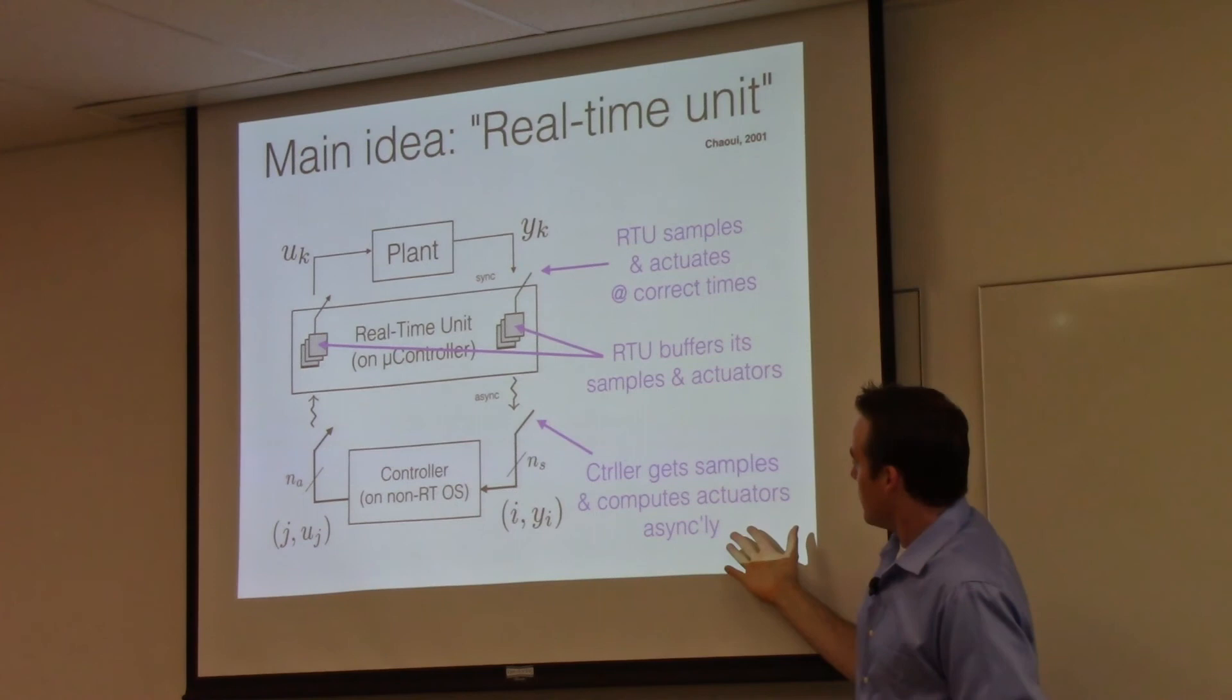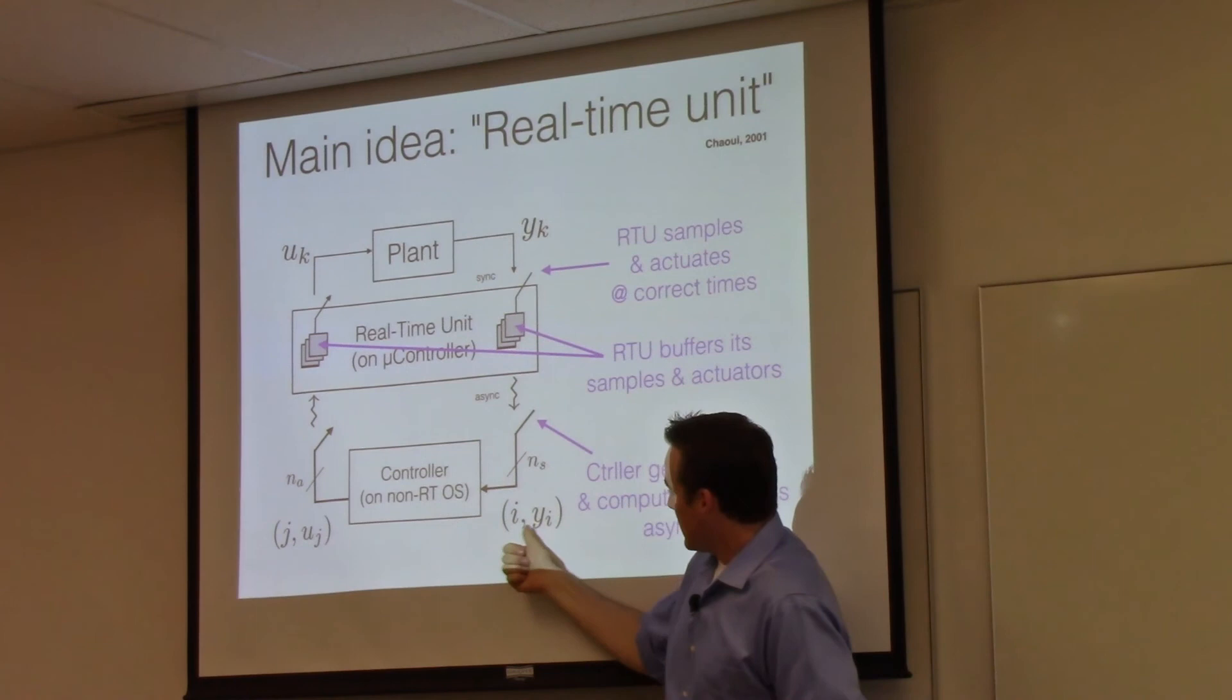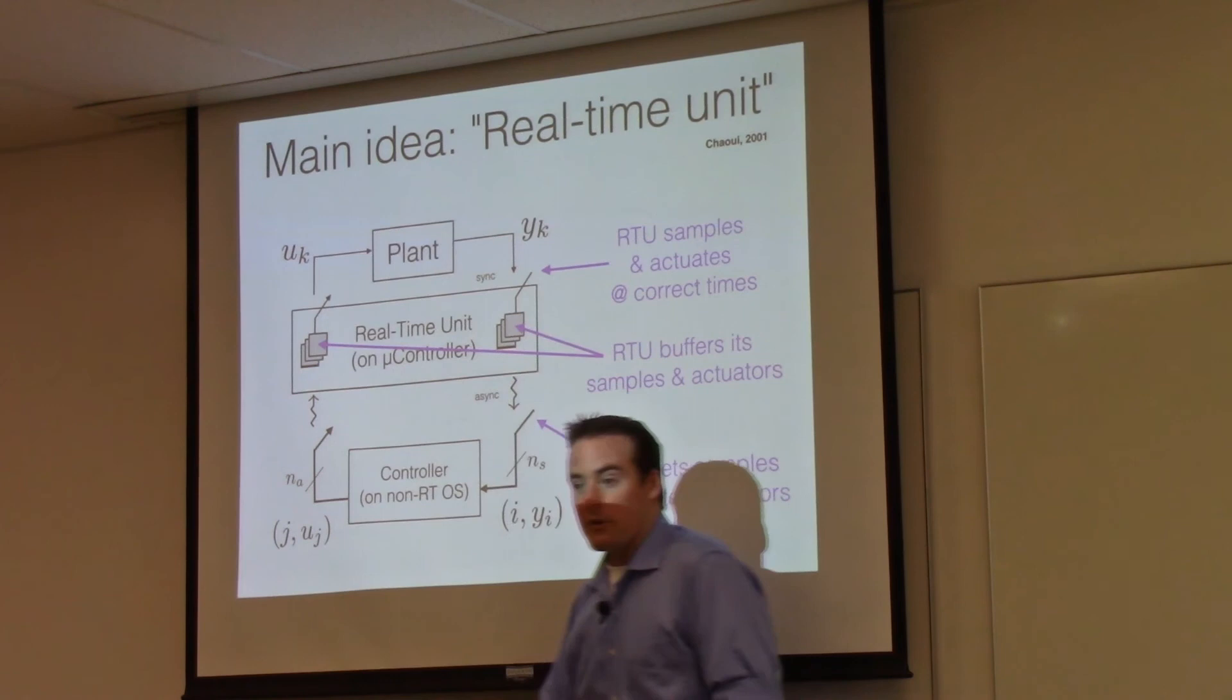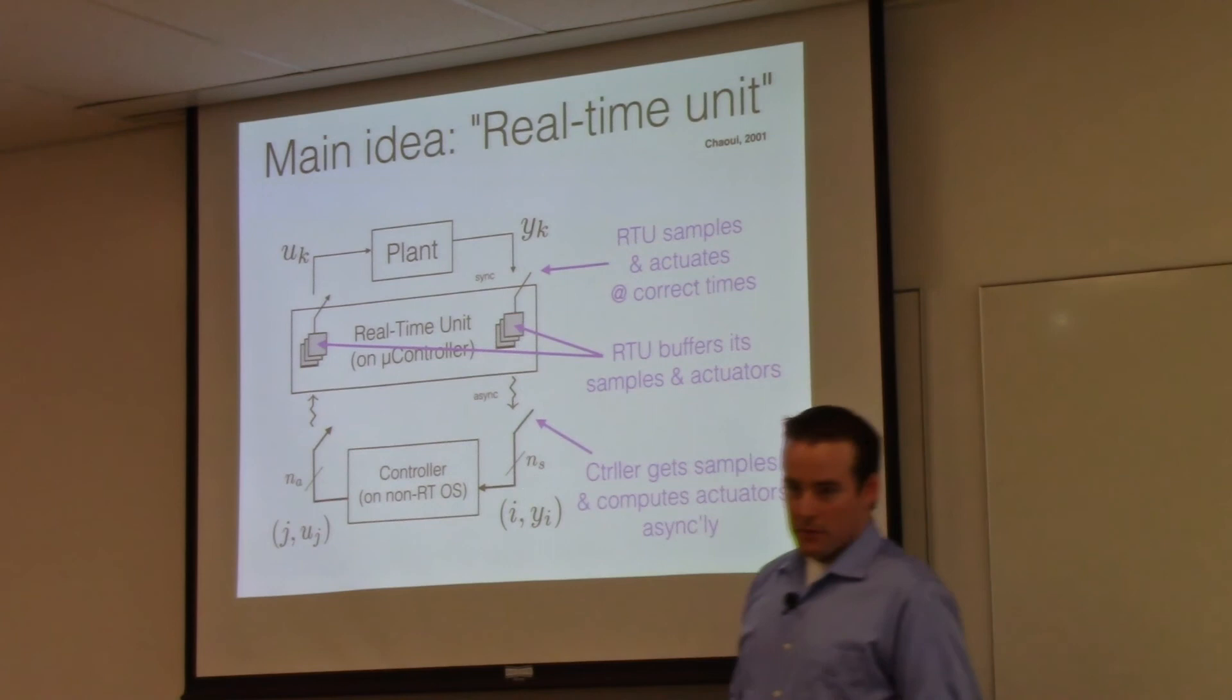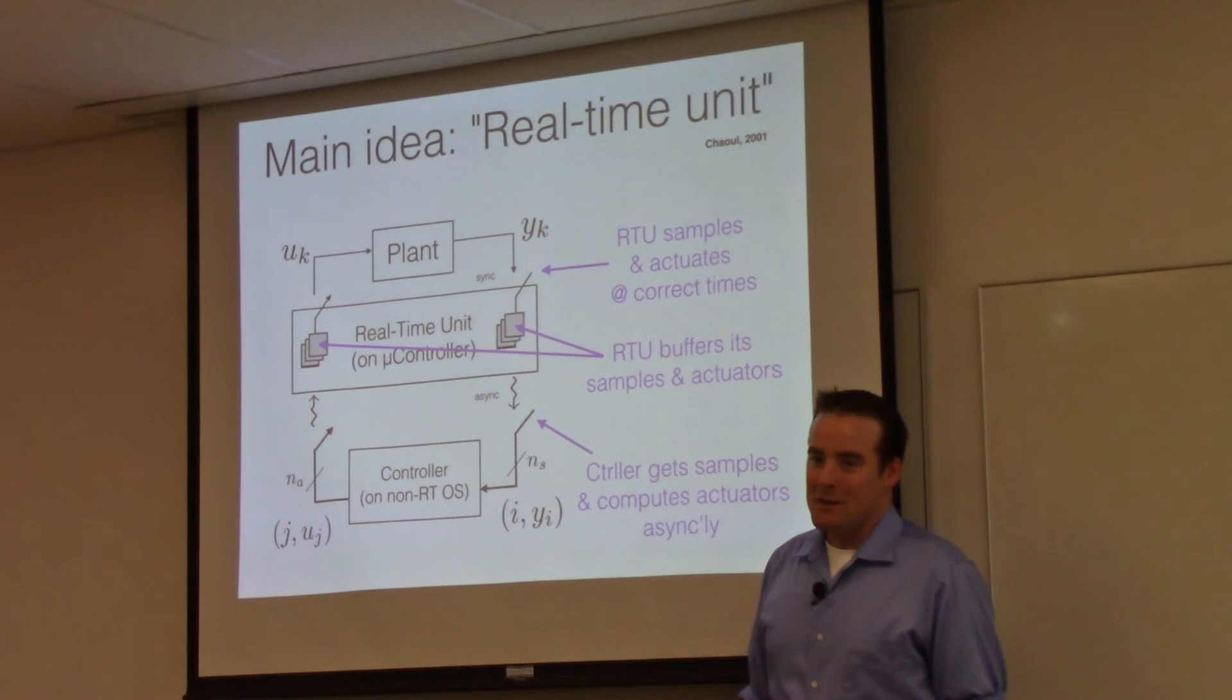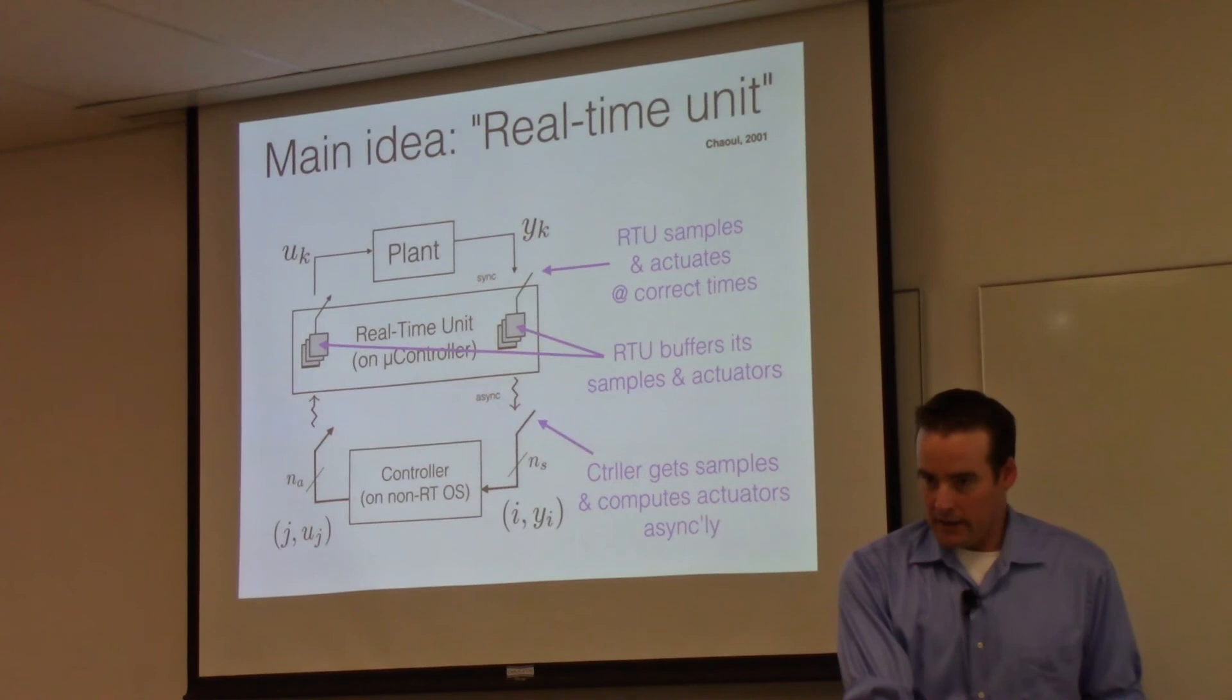The controller then can collect all at once asynchronously, whenever it gets a CPU, it will collect the sensor measurements, the timestamp sensor measurements from the RTU. So this is like the timestamp and this is the sensor measurement. There's NS of them. You get to decide how many sensor measurements are buffered. It will run some sort of control algorithm to produce another array of timestamped actuator values and it will deliver those to the RTU to deliver in case the controller gets put to sleep or preempted by the operating system.